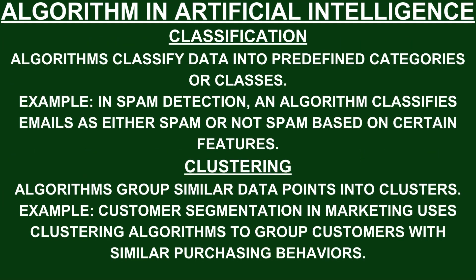Classification: algorithms classify data into predefined categories or classes. For example, in spam detection, an algorithm classifies emails as either spam or not spam based on certain features. Clustering: algorithms group similar data points into clusters. For example, customer segmentation in marketing uses clustering algorithms to group customers with similar purchasing behaviors.